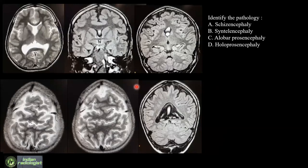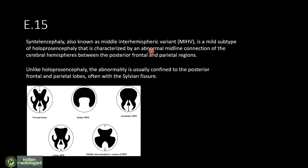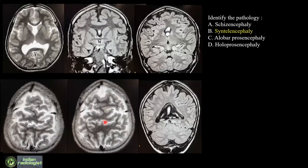The last question: identify the pathology. Over 100 responses received, and most correctly identified option 2 — syntelencephaly. This is a spectrum within holoprosencephaly — the middle interhemispheric variant, a mild subtype characterized by an abnormal midline connection of the cerebral hemispheres between the posterior frontal and parietal region. Similar to lobar holoprosencephaly, but the interhemispheric fissure is characteristically absent in this region. The rest of the brain appears more or less structurally normal, and there is an appearance of a monoventricle due to fusion.